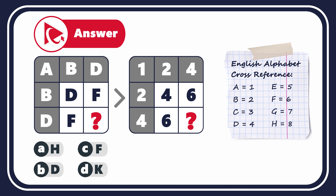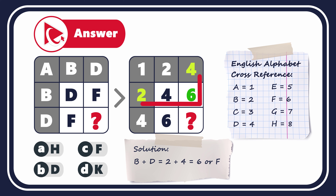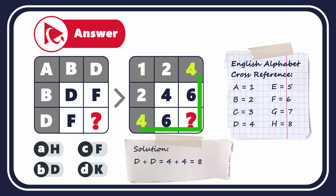The next step is to determine what's happening with the numbers and how to calculate the missing number. Numbers in the white squares are the result of addition of numbers in the gray squares. For example, 2 plus 2 equals 4; 4 plus 2 equals 6 — this is how the numbers in the white squares of the second row are calculated. 2 plus 4 equals 6, which is the result in the third row. This means the missing number is calculated as 4 plus 4, which equals 8. So the correct answer is Choice A: H, because H is the letter that corresponds to the number 8.